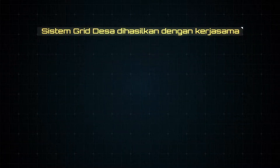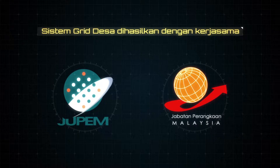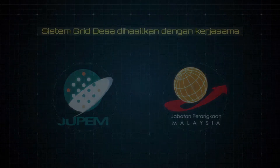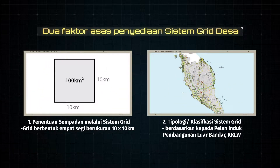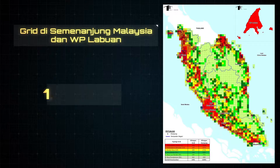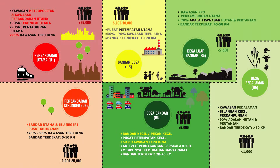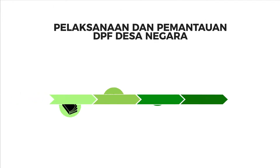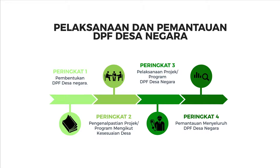DPF Desa Negara telah menghasilkan Sistem Grid Desa dengan kerjasama daripada Jabatan Perancangan Malaysia dan Jabatan Perangkaan Malaysia. Asas penyediaan Sistem Grid Desa adalah berdasarkan kepada dua faktor. Semenanjung Malaysia dan Wilayah Persekutuan Labuan telah dibahagikan kepada grid yang dikategorikan kepada enam kriteria tipologi berdasarkan fungsi dan peranan kawasan, peratusan jenis guna tanah, jumlah penduduk dan jarak dari bandar terdekat.